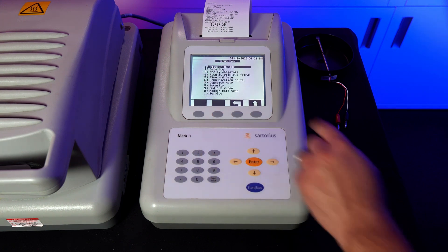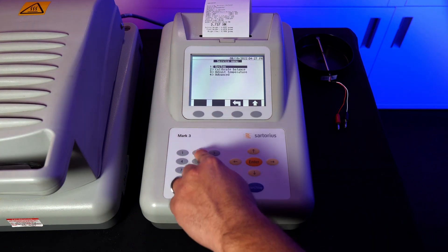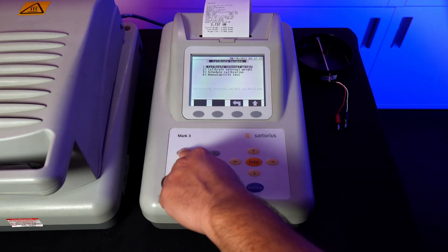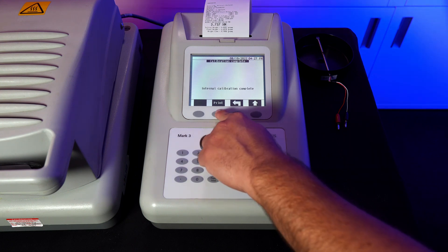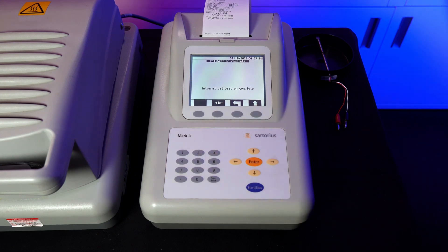Hit the setup key, hit period for service, hit 2 for calibrate balance, hit 1 for internal weight calibration. Calibration will begin automatically and take around 30 seconds to complete.